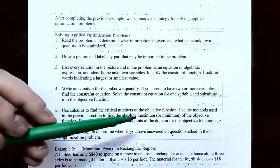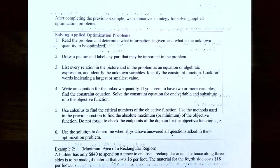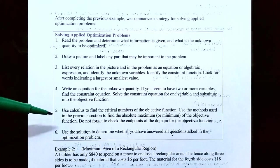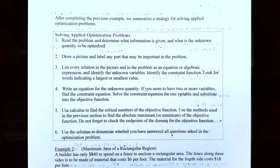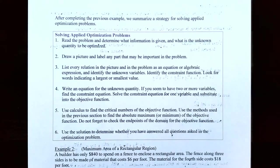Step five: use calculus to find the critical numbers of the objective function, then use those methods to find the absolute maximum or minimum. Do not forget to check the endpoints of the domain. Step six: use the solution to determine whether you have answered all the questions. Just finding y = 20 wasn't enough — we also had to find x = 30 to give the full dimensions.